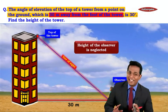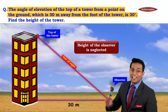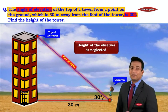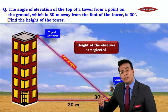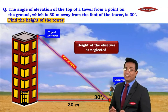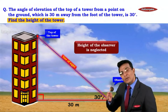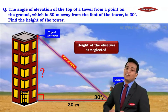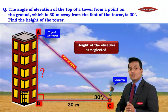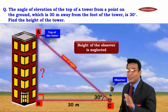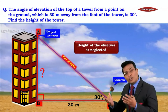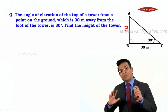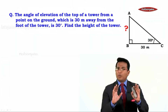So we have the angle of elevation as 30 degrees. We need to find the height of the tower. The tower is perpendicular to the ground, so a right angle triangle ABC is formed. We need to find the length of AB. You are just going to draw a right angle triangle ABC with this information.